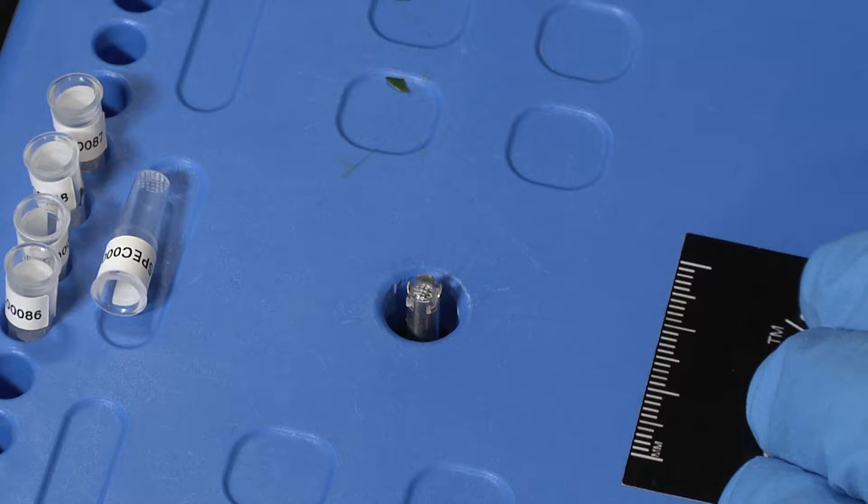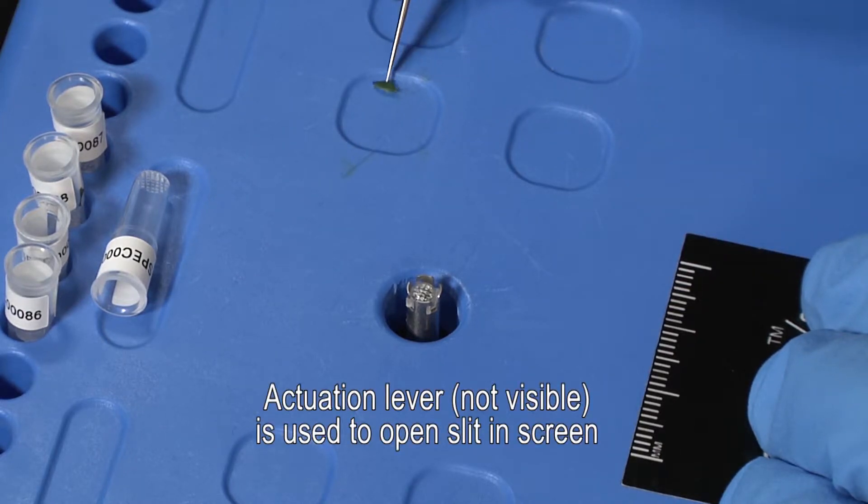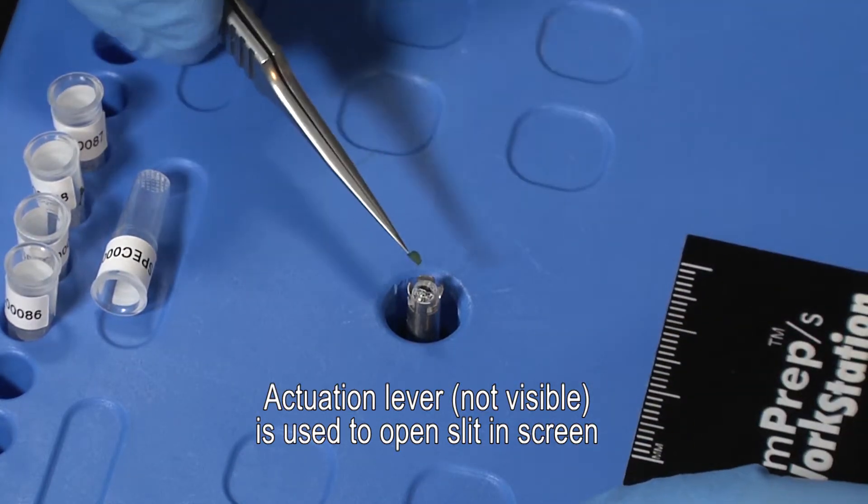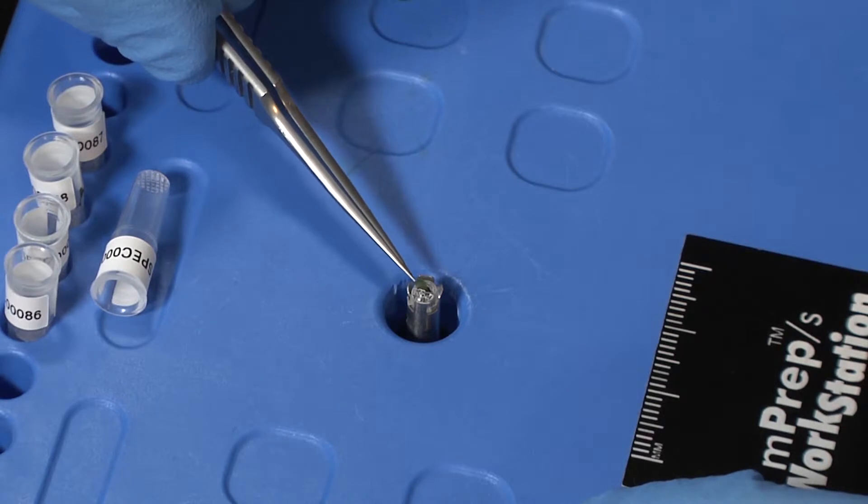With a little practice, this can be done very quickly by feel. To pinch mount a specimen, simply press down on the actuation lever to open the slit. Then insert the specimen and release the lever to clamp the back end.